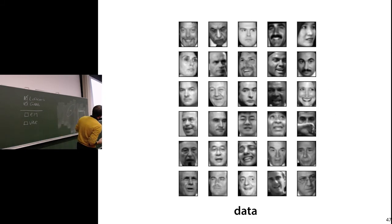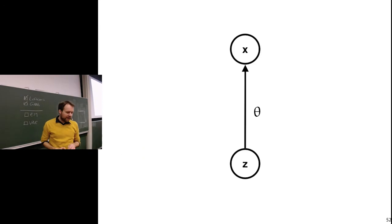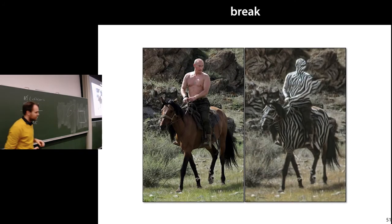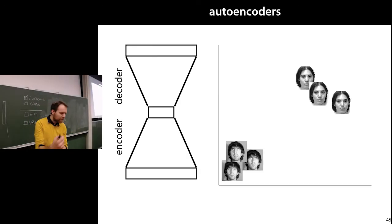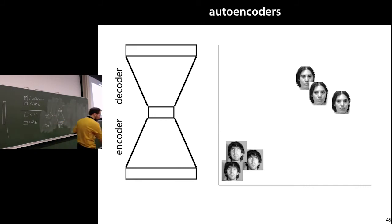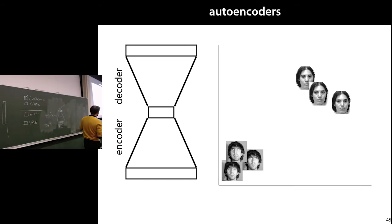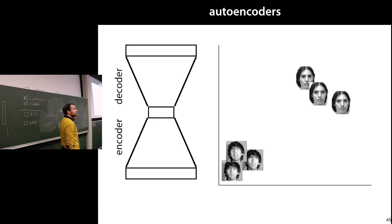Let's have a 15-minute break and then we're going to talk about EM and variational autoencoders. Welcome back. We were talking about generative models — ways to sample things that are like your data, like images. We're going to work towards variational autoencoders.